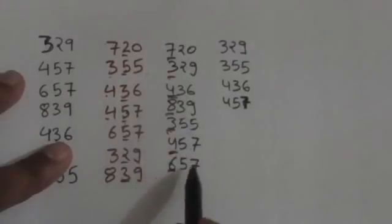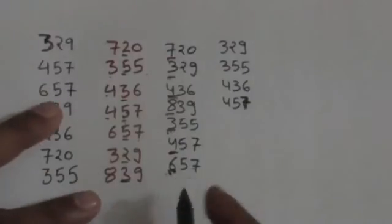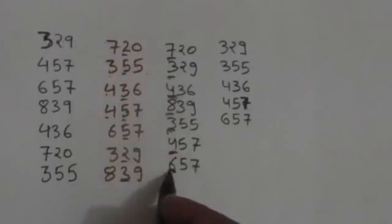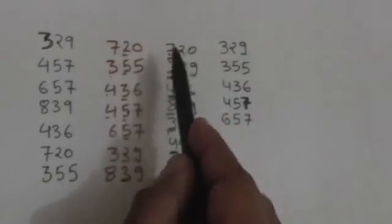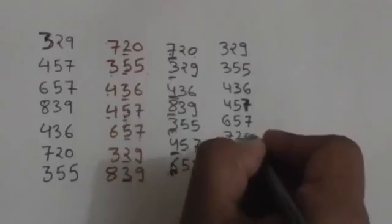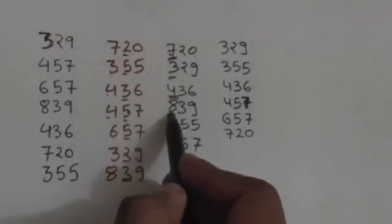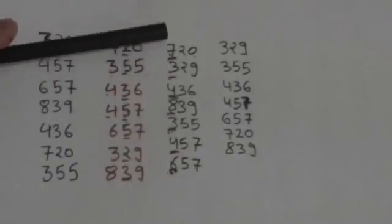Now the smallest most significant digit which is greater than 4 is 6, so we will write this number 657. Then the smallest most significant digit which is greater than 6 is 7, so we will write 720. The smallest most significant digit which is greater than 7 is 8, so we will write 839. In this way we have written the numbers of this list such that their most significant digits are in increasing order.